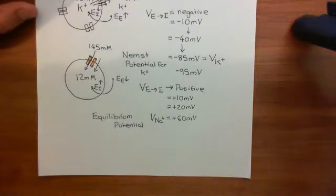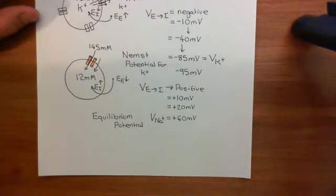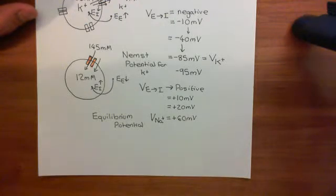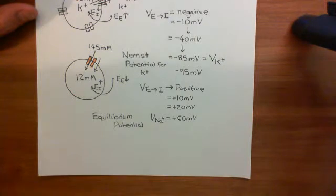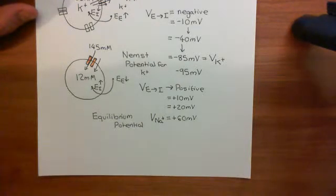Welcome back to this next video in which we are discussing the two-pore domain potassium channels, which are the leaky potassium channels that are in all cells and which are responsible for the resting electrical potential difference across cell membranes. We spent the previous video reminding ourselves of Nernst potentials. What we now want to do is put it together and get an understanding of the resting membrane potential.